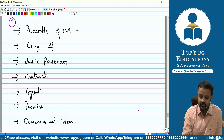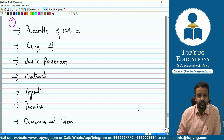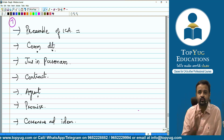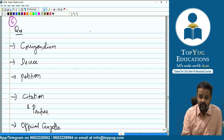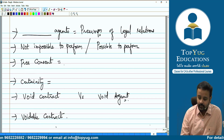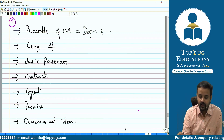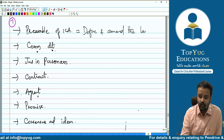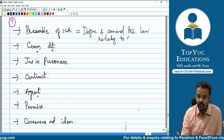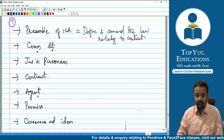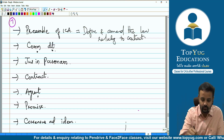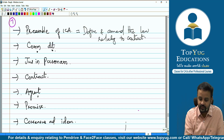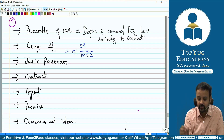What is the preamble of the Indian Contract Act? It says: to define and amend the law relating to contract. Wherever some customs exist, they want to amend them, and wherever there is no custom or guideline, they want to come up with one. The commencement date of the Indian Contract Act is 1st September 1872, coming from Section 1.